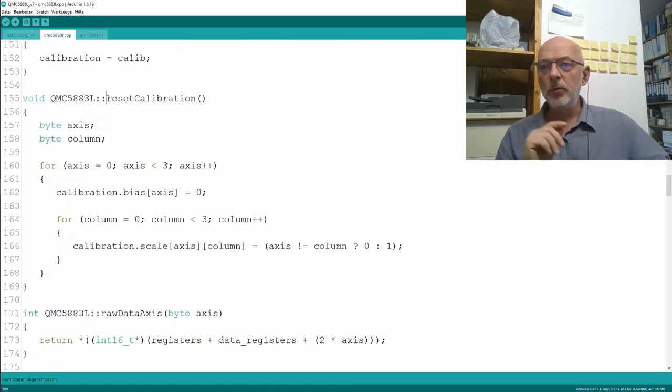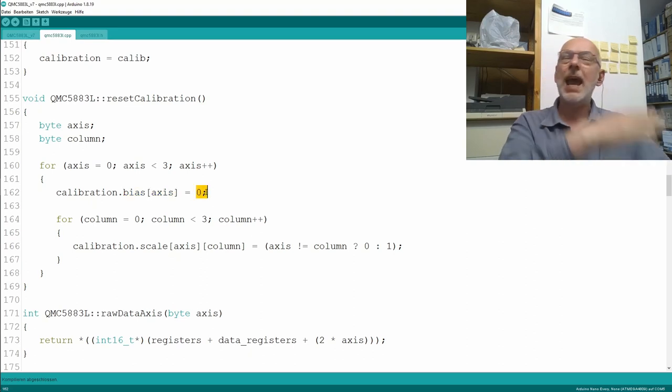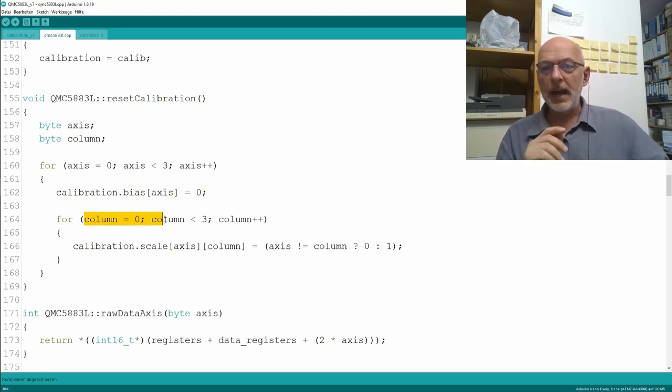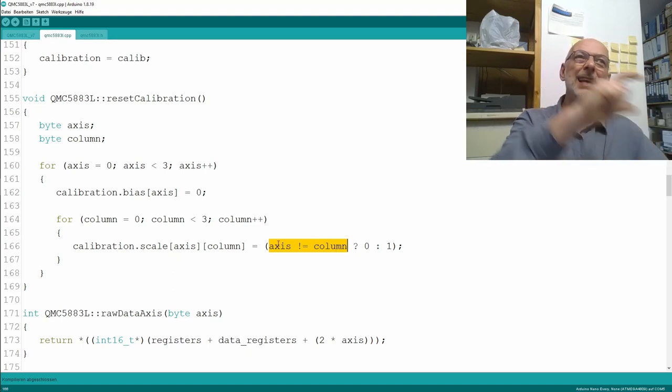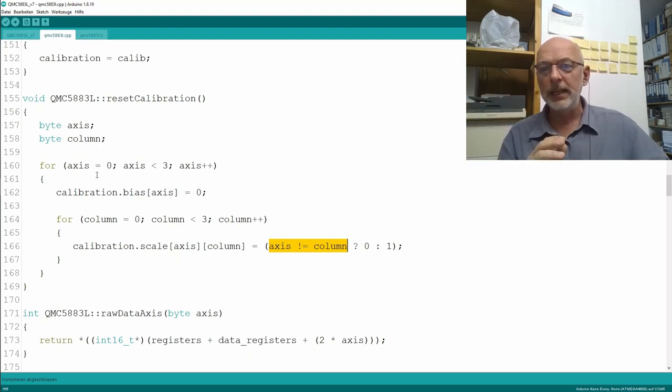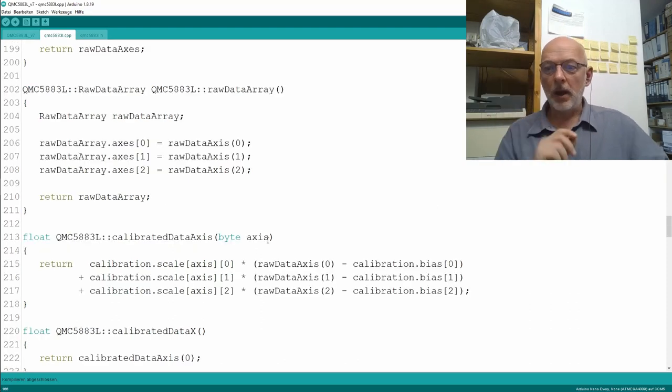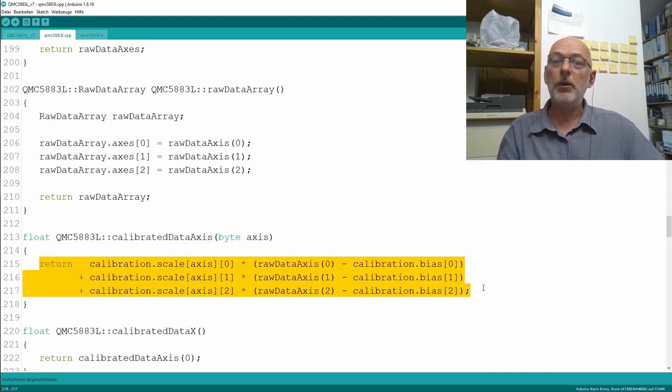In the C++ file, I rewrote the reset calibration method. It still goes over all the axes and sets the bias for each axis to zero, so we add nothing to our raw values. Then it goes through every cell in our matrix and sets the values in the diagonal to one and all other values to zero. If you multiply our raw values with that matrix, you get our raw values. So that really resets the calibration to something that doesn't change our raw values. I also changed the calibrated data axis function to do the math now for our new calibration method.